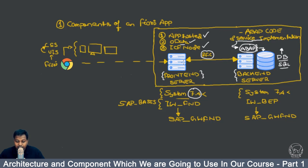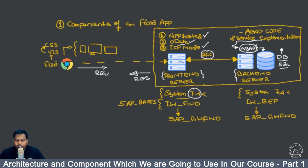Data goes through the RFC communication. Any request from the front-end server to get data present in the back-end system is also done through RFC — similar to how a browser sends a request and receives a response from a server. Any server following the HTTP or TCP/IP protocol works this way. In RFC, certain network-level protocols are followed and an RFC configuration must be done, though the network-level details are outside the scope of this course.